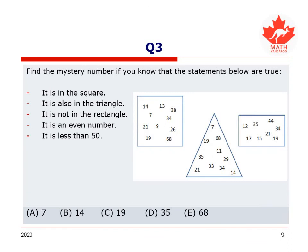Let's find the mystery number if we know that the following statements are true: this mystery number is inside the square; it is also inside the triangle; it is not in the rectangle on the right; this mystery number is an even number; and it is less than 50. What is our mystery number? Take a second, pause the video, study the numbers and statements very carefully, figure out logically what is the only possible answer, and select it from A, B, C, D, or E.